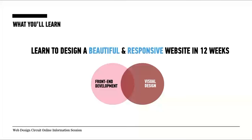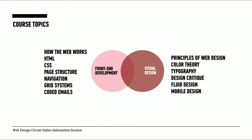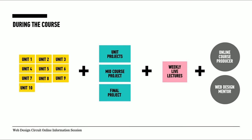The Web Design Circuit course is composed of two sections: front-end web development and visual design. You'll learn how to design beautiful responsive websites in 12 weeks. On the front-end side: how the web works, HTML, CSS, page structure, navigation, grid systems, and coded emails. On the visual design side: principles of web design, color theory, typography, design critique, fluid design, and mobile design. The course is broken into 10 units with unit projects, a mid-course project, and a final project of your own choice.